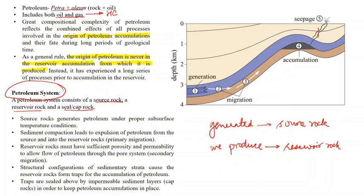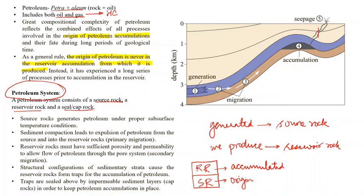The source rock is the one where the petroleum is generated — the origin of petroleum. Then we get the reservoir rock, where petroleum is accumulated. And above this reservoir rock is the cap rock. What does the cap rock do? The cap rock locks or arrests the petroleum in the reservoir rock.